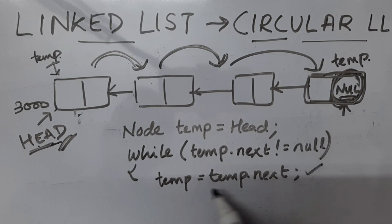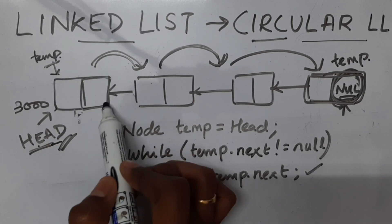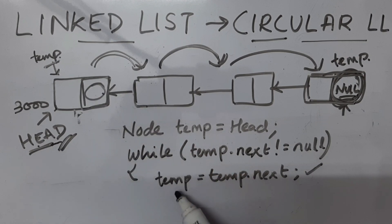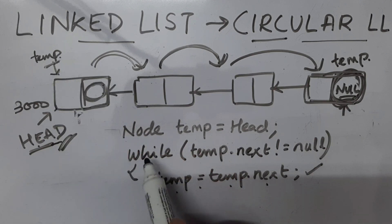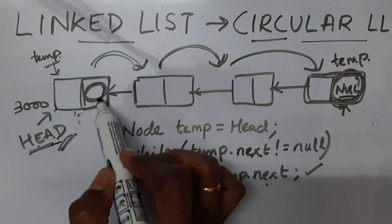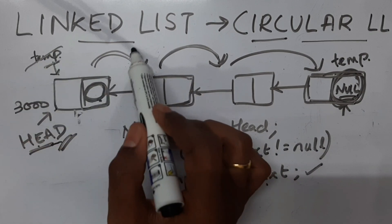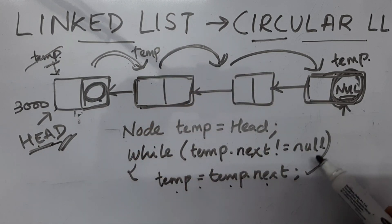The meaning of this line: I'm telling temp is equal to temp.next. What is temp.next? Temp.next is this area, and this area has the address of the next node. So when I say temp equal to temp.next, temp is now equal to the address present at that location, which is the next node's address. So temp moves to the next node, and in this manner it keeps moving until it finds null. So let me close the while loop.